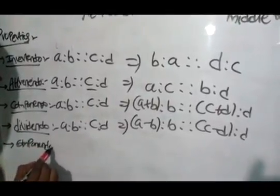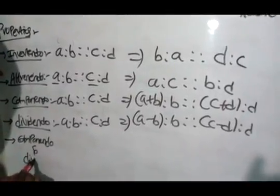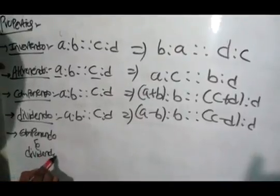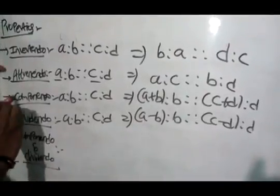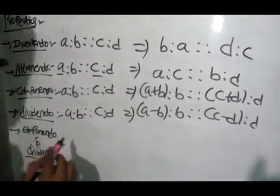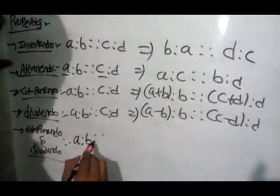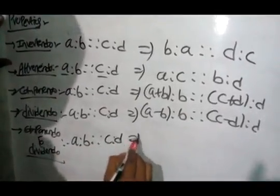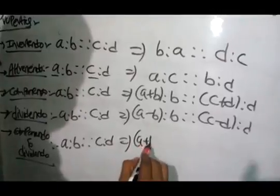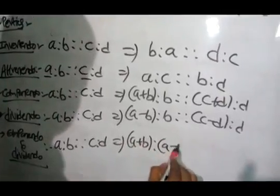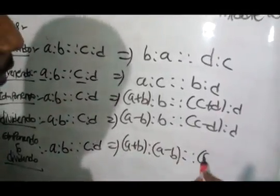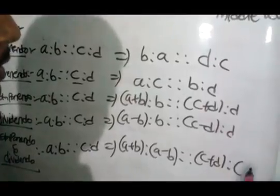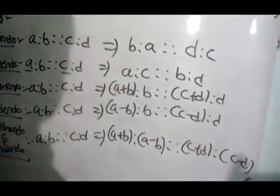Next one is componendo and dividendo. That means both addition and subtraction. If a is to b equal to c is to d, it can be added first and then subtracted. Similar manner, it can be added first, then subtracted.